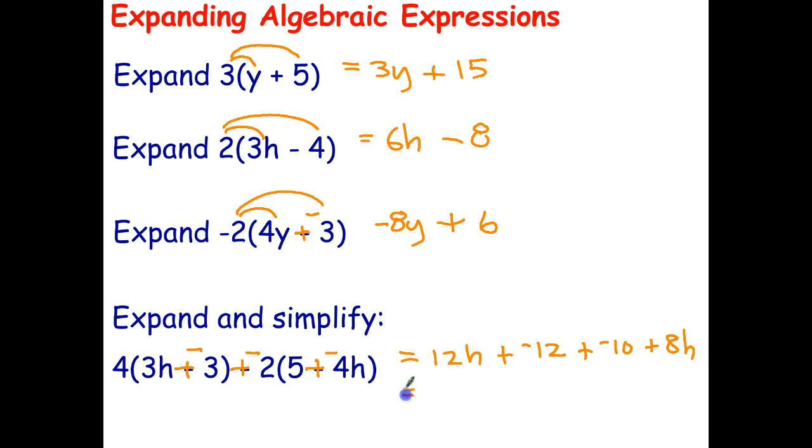Now, we're not quite finished. We can now simplify this because we are allowed to add like terms. In fact, we have to add like terms. So, in this case, like terms have exactly the same letter part. So, 12h plus 8h adds to give us 20h. Plus, and then we just add the numbers together. Negative 12 plus negative 10. Well, if you add two negatives, you get a larger negative. So, plus negative 22.